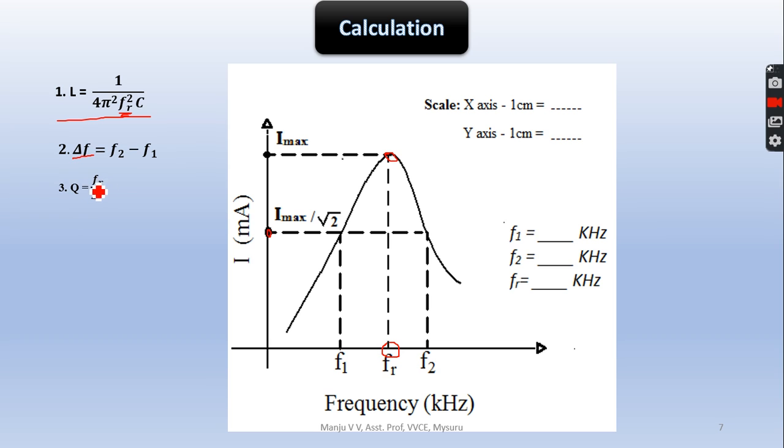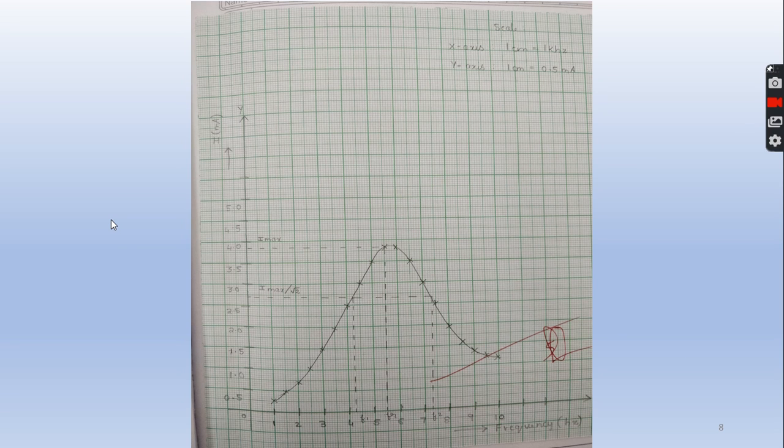Now, the frequency I know - the resonance frequency - and bandwidth I will get from equation 2. And multiply so that you will get the quality factor value. This is one of the model graphs which we have already plotted.